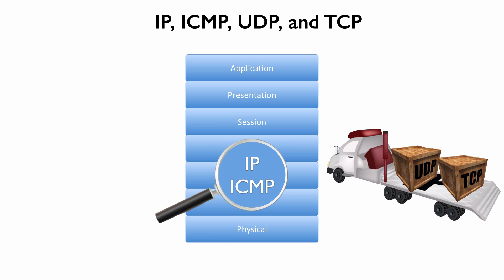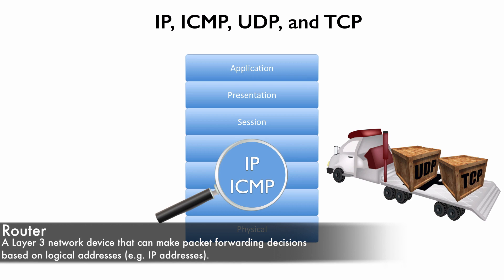They're going to be sent via IP. Later on we're going to get much more in depth into IP — we're going to contrast IP version 4 and IP version 6 and see how IP addressing works. For now, understand that IP is a layer 3 protocol, and a piece of hardware that lives at layer 3 is a router. A router can make a forwarding decision based on a layer 3 address, like an IP address.